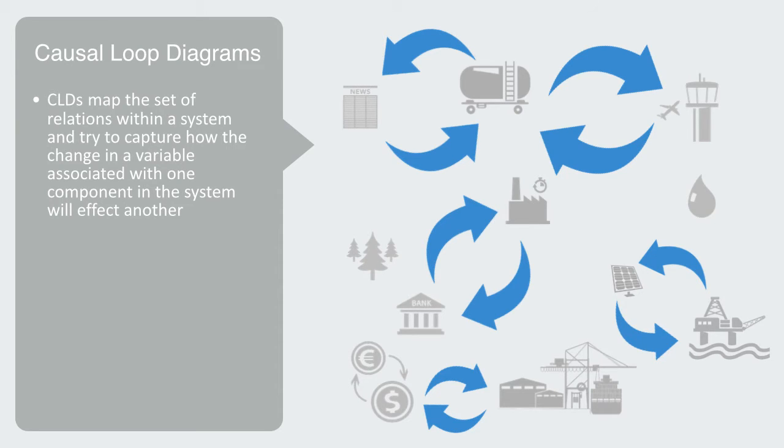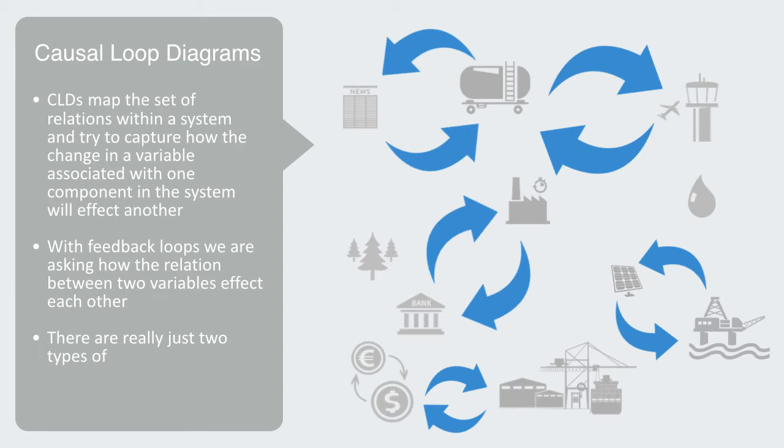When causal links between related variables feedback on each other, we have then what is called a feedback loop. With feedback loops, we are asking how the relation between two variables affect each other, and there are really just two types of feedback loops, positive and negative feedback.